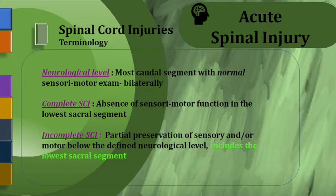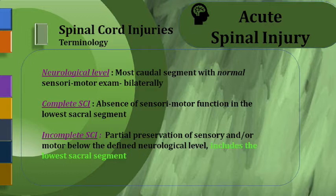Complete spinal cord injury is defined by absence of sensory and motor function in the lowest sacral segment, which is S3 and S4. The sensory function is sensation around the perineal region, and the motor function is anal contraction. To define whether injury is complete or incomplete, we should always check sensation around the perineal region as well as anal contraction. If any sensation around the perineal region is intact, we can call it incomplete spinal cord injury.